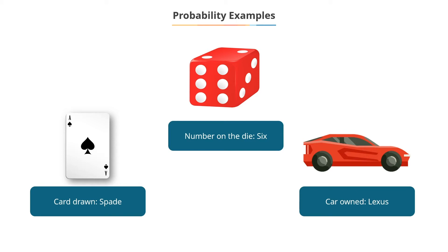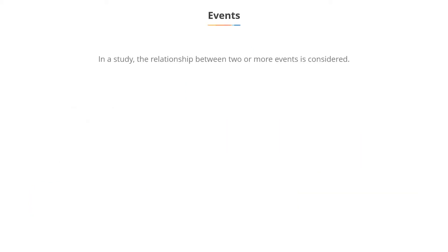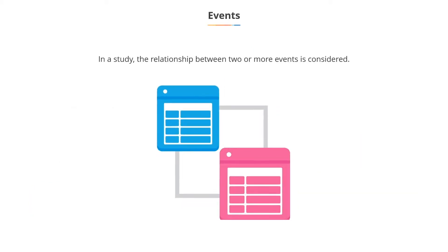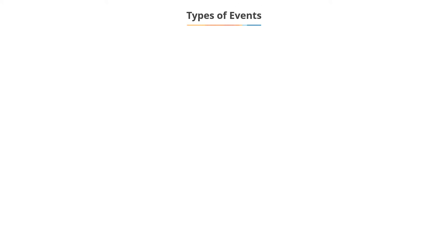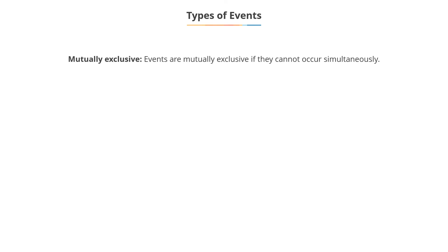Often, two or more events are considered simultaneously in a study or investigation. The relationship between events, if any, requires consideration. The two important types of relationships are: mutually exclusive and totally exclusive.